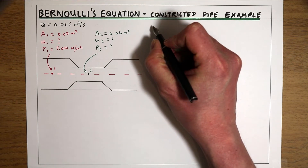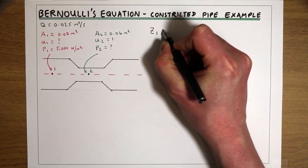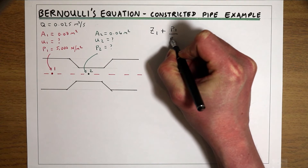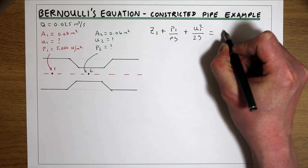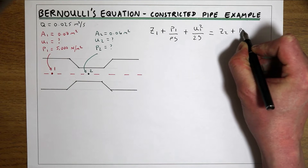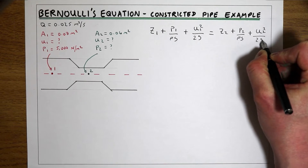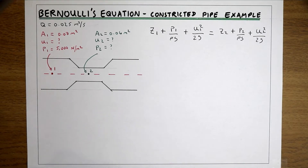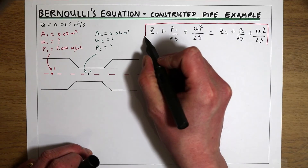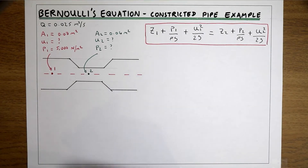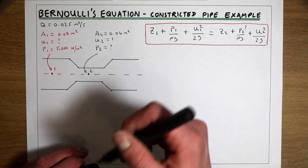To solve this we need Bernoulli's equation. We know that elevation plus pressure head plus velocity head at point 1 are equal to elevation plus pressure head plus velocity head at point 2. This is Bernoulli's equation that we can apply to this example. What we're trying to find is the term P2, the pressure at point number two in this system.